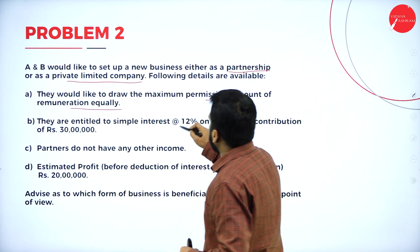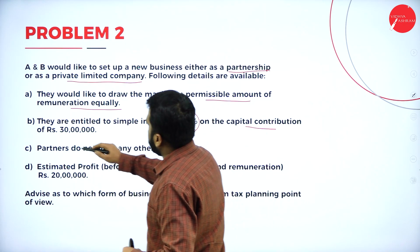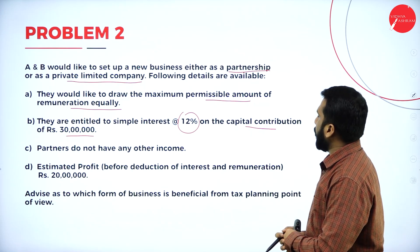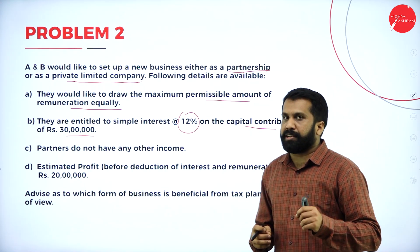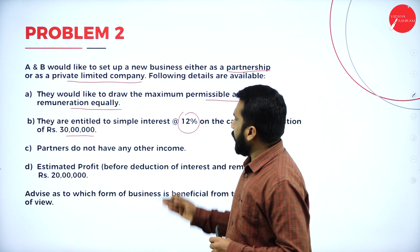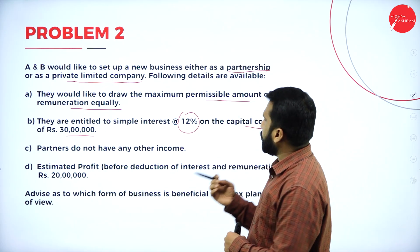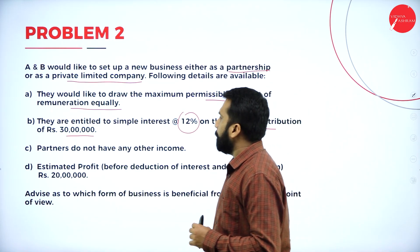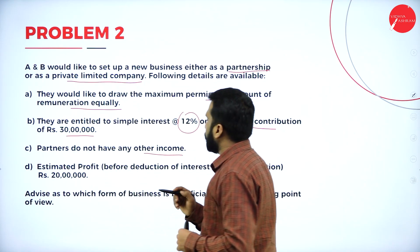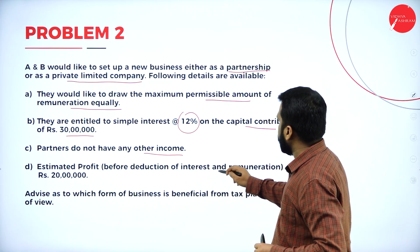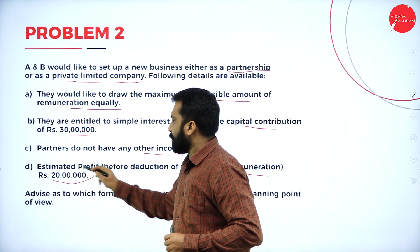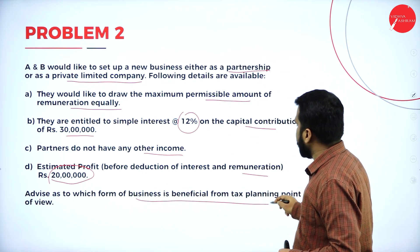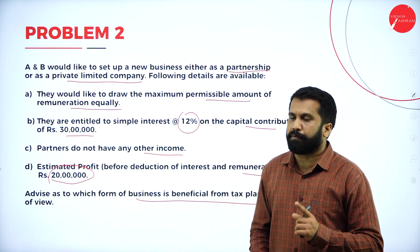They are entitled to simple interest of 12% on capital contribution of 30 lakh. Interest calculation and capital contribution are given. The amount of 30 lakh belongs to both partners together. Partners do not have any other income. Estimated profit before deduction of interest and remuneration is 20 lakh. Advice as to which form of business is beneficial from a tax planning point of view.